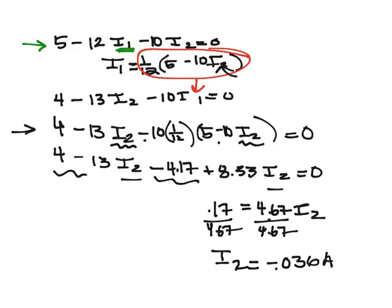And I can calculate I1. I know I1 is equal to 1 twelfth times 5 minus 10 times I2. So that's minus 10 times negative 0.036.